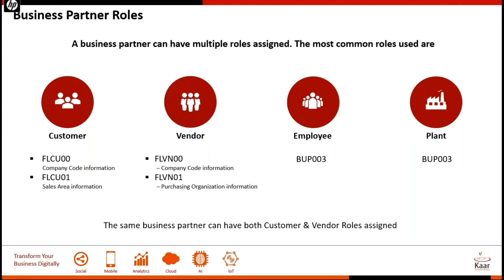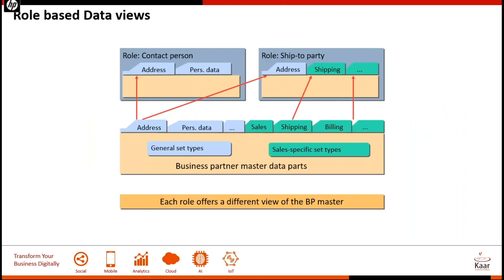So we can use a number of functionalities in business partners, just as in our traditional ECC system — specific data for transactions like general information, sales information, and company code information. Based on the roles assigned to the business partner, the data views will be shown. If you want to extend the business partner to contact persons, the relevant tab will be shown. The same contact person can also act as a ship-to party for sales, and the view will be extended accordingly. In a single transaction, you can hold a large amount of information based on the roles you have assigned, and each role has a different view for the business partner.